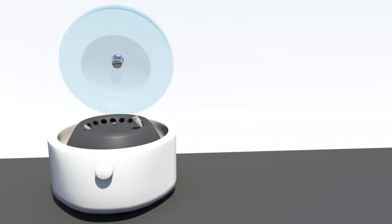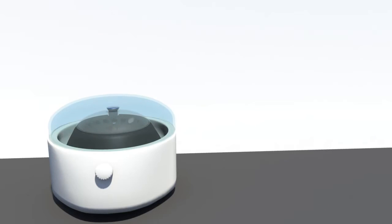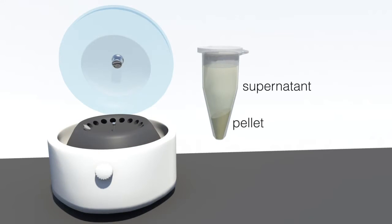Following lysis, cells and their contents are spun in a microcentrifuge. This results in an aqueous supernatant, which contains solubilized proteins, and a pellet, which contains membranes, organelles, nucleic acids, and any remaining insolubilized proteins.